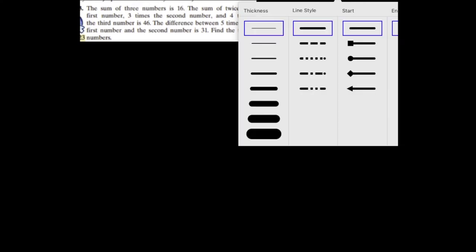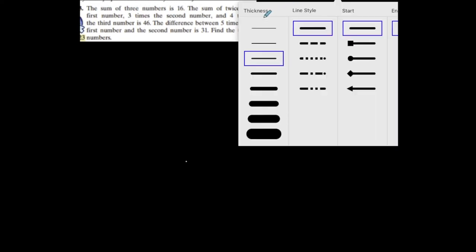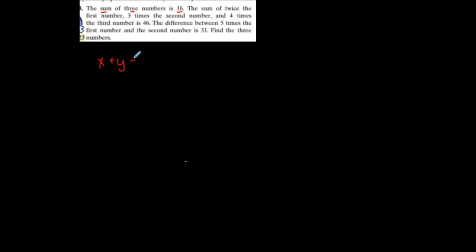I wanted to do a couple of word problems dealing with systems of three variables. Let's read this: the sum of three numbers is 16. That's three numbers and their sum is 16. So x plus y plus z is 16 — that is the sum of three numbers.